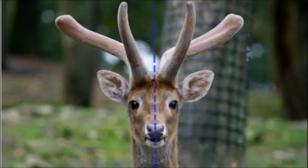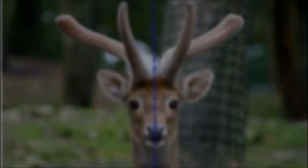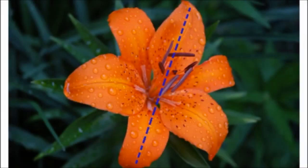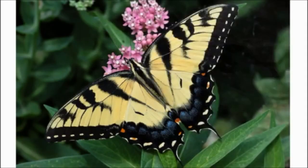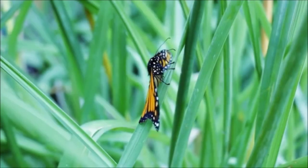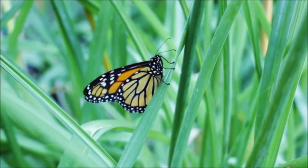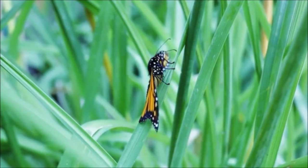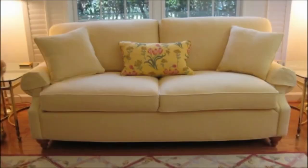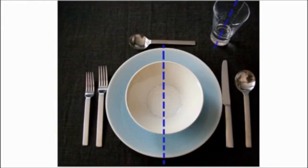Symmetry is often found in nature. One favorite example of this is a butterfly. When a butterfly folds its wings, it is easy to see that they are the same shape. Now that you know what symmetry means, see if you can find symmetrical objects near you. You may be surprised by how many things are symmetrical.